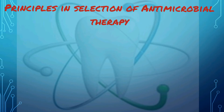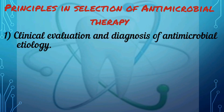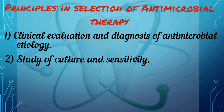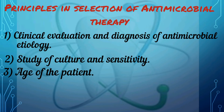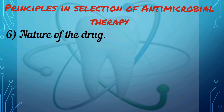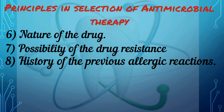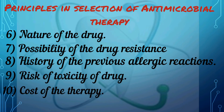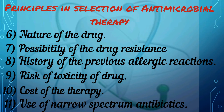Now we can go through the various principles for the selection of antimicrobials. It is not possible to prescribe any antibiotic to any patient. Factors necessary for selection include: clinical evaluation and diagnosis for antimicrobial etiology, culture and sensitivity studies, age of the patient, pregnancy and neonatal period, severity of the disease, nature of the drug, possibility of drug resistance, history of previous allergic reactions, risk of toxicity, cost of therapy, and use of narrow spectrum antibiotics.